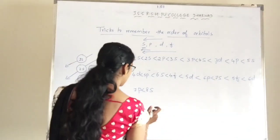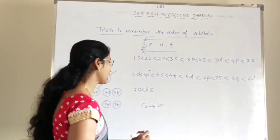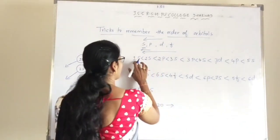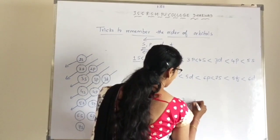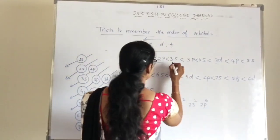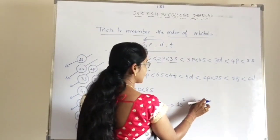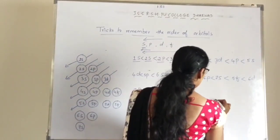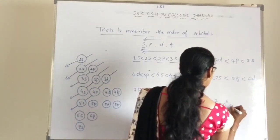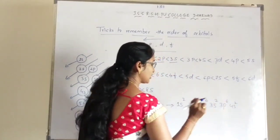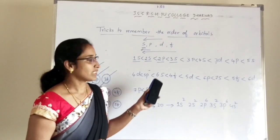Let's take calcium as an example, which has atomic number 20. The electronic configuration is: 1S² has capacity 2, then 2S² capacity 2, then 2P⁶ capacity 6 — that gives 2+2+6 = 10. Then 3S², 3P⁶, and 4S². So 10+10 = 20. This is the electronic configuration of calcium, derived using these tricks.